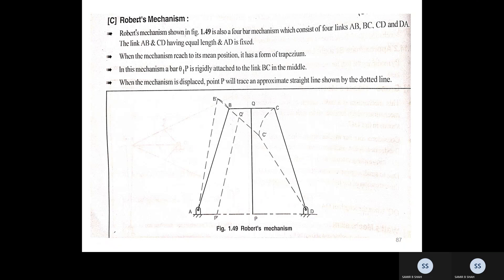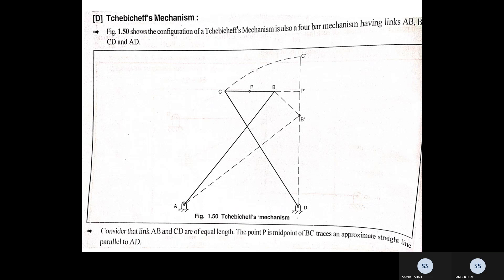The last one is Tchebicheff's mechanism. As shown in the figure, AB, BC, CD, and AD are the four links, with links AB and CD of equal length. The point P is the midpoint of BC. Point P traces an approximate straight line parallel to AD. We generate a near-to-straight-line mechanism. These four mechanisms are where approximate straight line motion is considered — we do not get an exact straight line, but we get one very close to it.